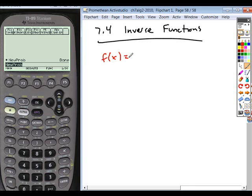So again, if you had a function like this. In order to find the inverse of this, you simply replace, again, the function.